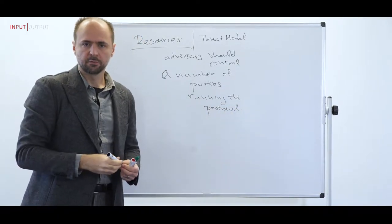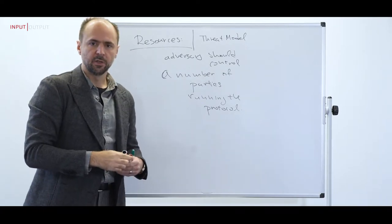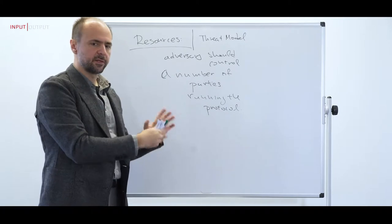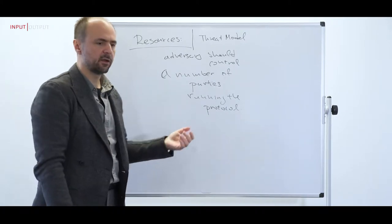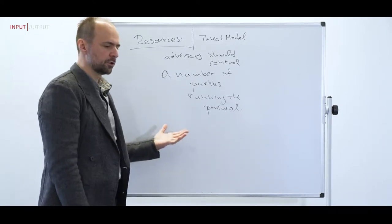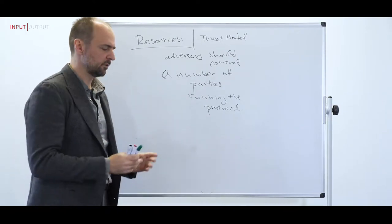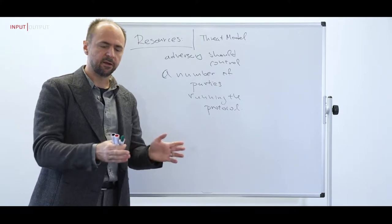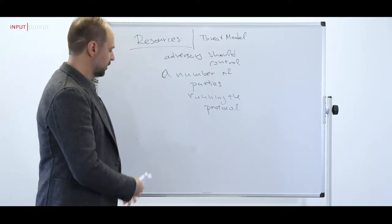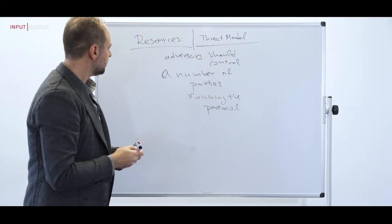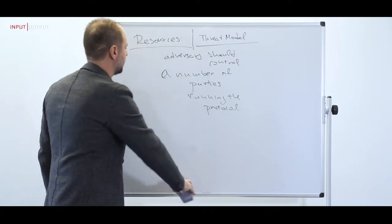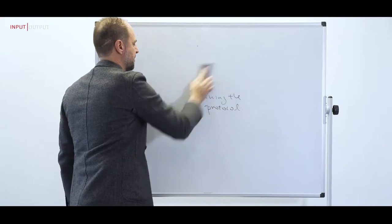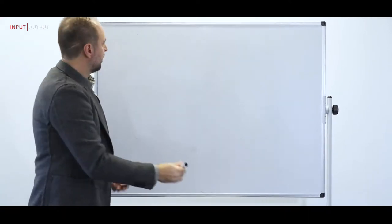We have to put a bound on how many parties the adversary should control, and depending on the setting, we will adjust this bound to fit the type of design we would like to make. In the proof-of-work setting, as in Bitcoin, the bound restricts the adversary to being the minority of the total hashing power available to the network. In the case of a proof-of-stake protocol, in contrast, the bound restricts the adversary to the minority of the stake recorded in the ledger.